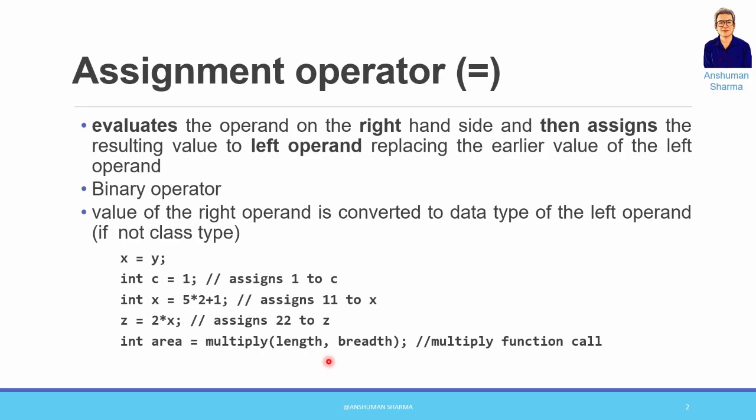In C++, the left-hand side L-value can also be a function call. In C this is less common, but in C++ the left operand can be a function call. We will do an example of this — I will show you the case where the left-hand side operand can be a function call, and also where an object can be on the left-hand side.